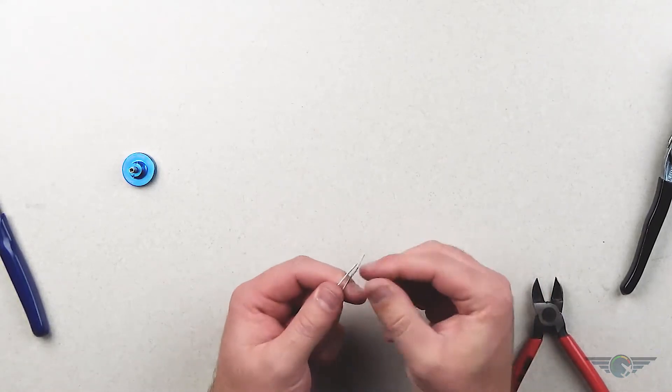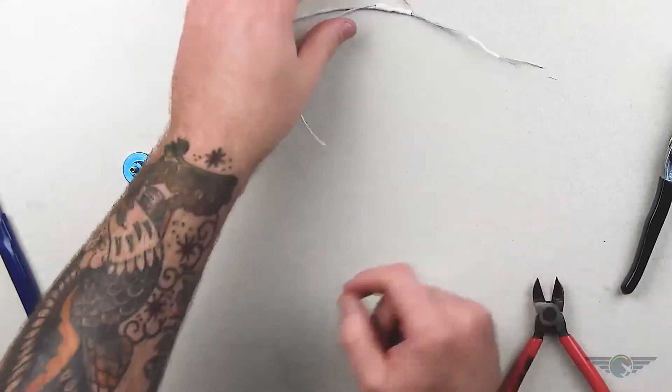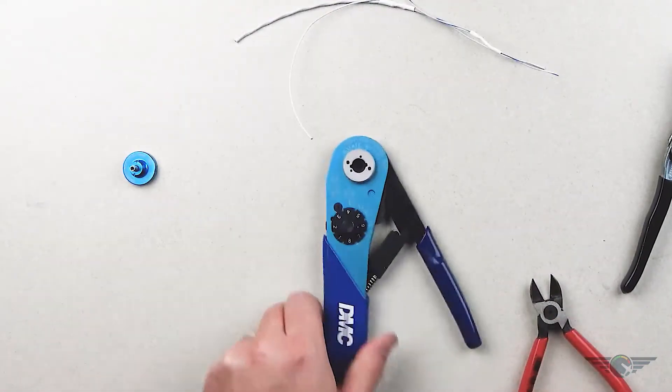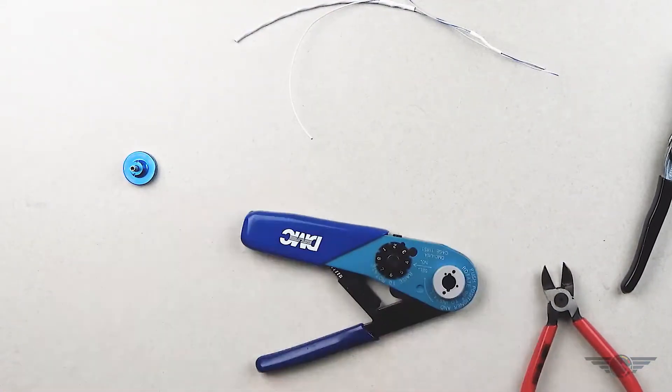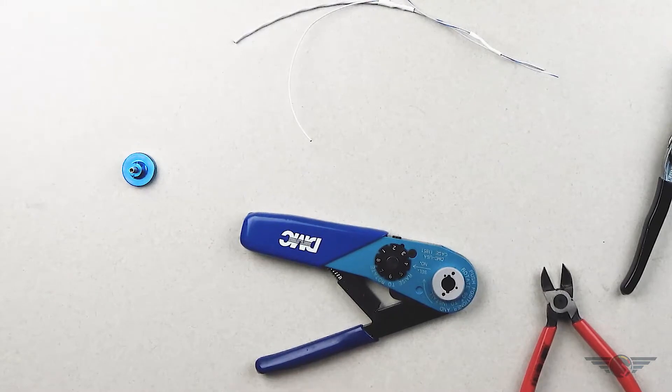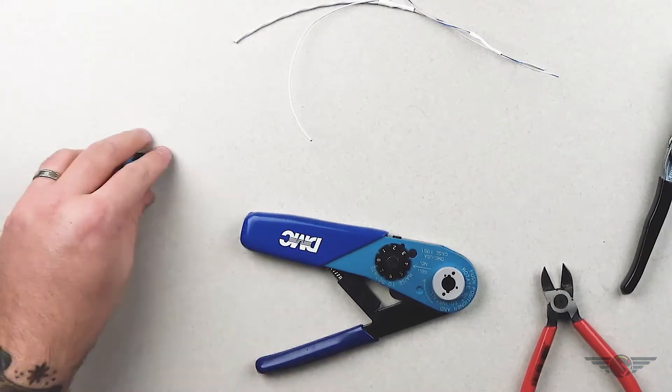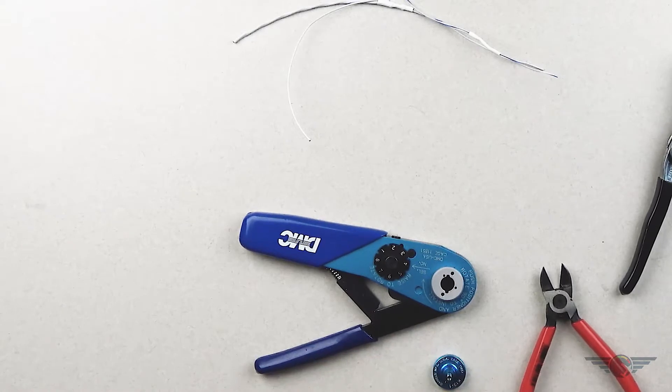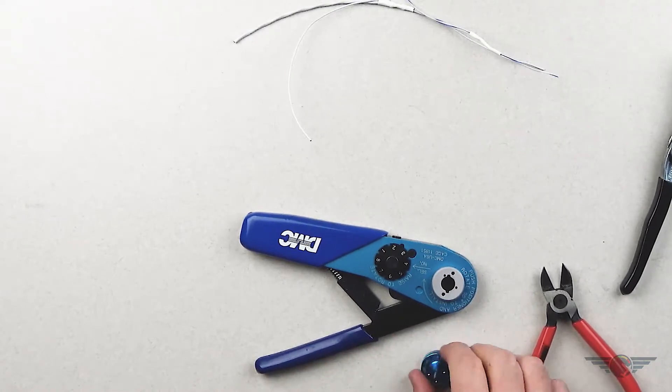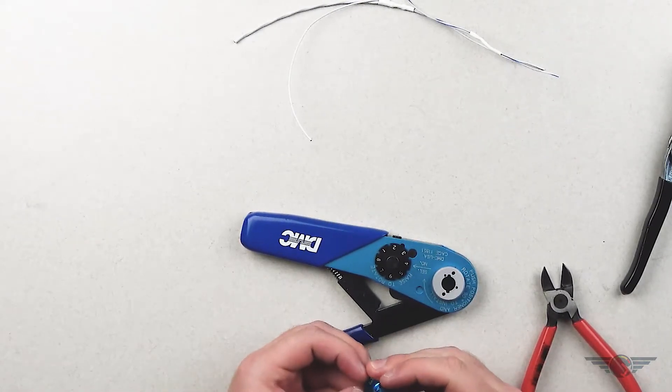To crimp a pin, here is my crimp tool. It's a Daniels Manufacturing AFM8, and here's the die you're going to need, which is a K13-1, as you can see on the inside of the die here.